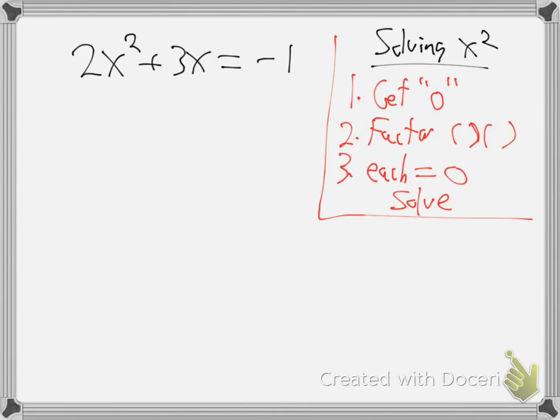This is the hardest section in the course. So, alright. So, step 1, get a 0. So, how am I going to get a 0? I'm going to jump this negative 1 on over to the other side. So, 2x² + 3x + 1 = 0. Good so far? So, there's step 1. Get a 0.